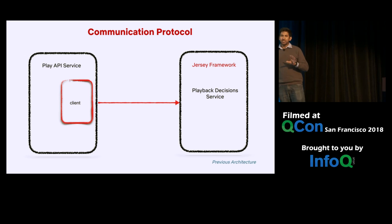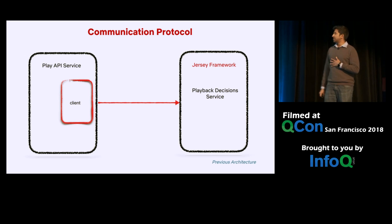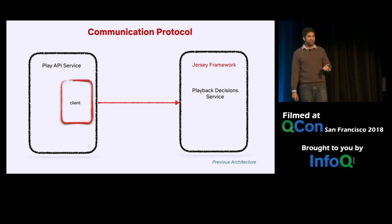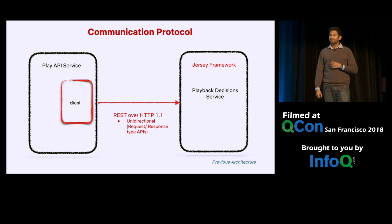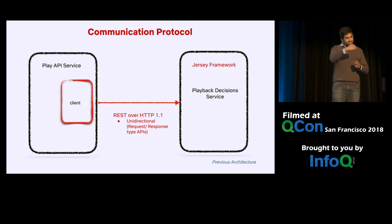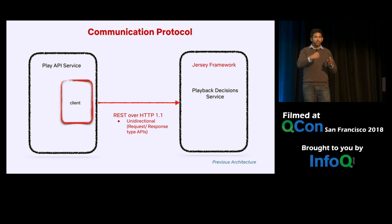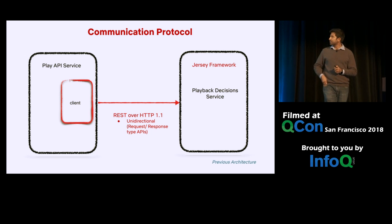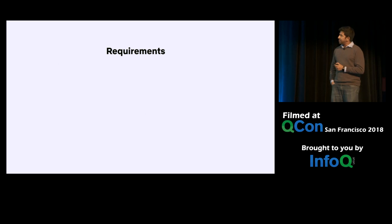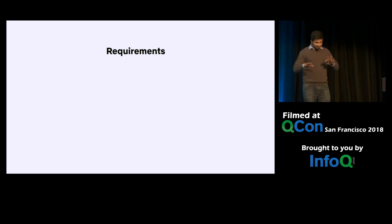With respect to client libraries, there's another form of subtle coupling around the communication protocol. Many services at Netflix are written on top of the Jersey framework via a REST interface, and most communication happens over REST over HTTP/1. It works well except it has one limitation: once the connection is established between client and server, all communication is initiated by the client — it's unidirectional, meaning it can only support request-and-response style APIs. Drawing from these experiences, we debated our requirements and came up with four.